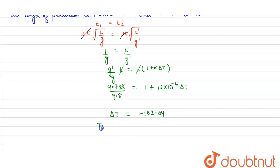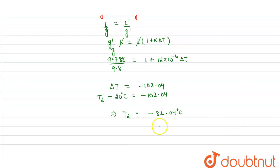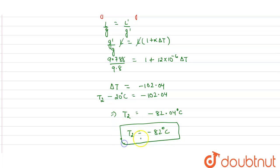Since Δt = T₂ − T₁ = T₂ − 20°C = −102.04, we get the final temperature T₂ = −82.04 degrees Celsius, or approximately T₂ = −82 degrees Celsius. This is the temperature at the new place at which the pendulum clock will give the correct time.